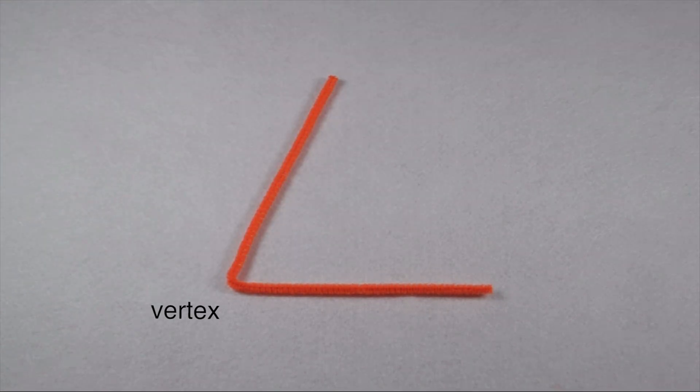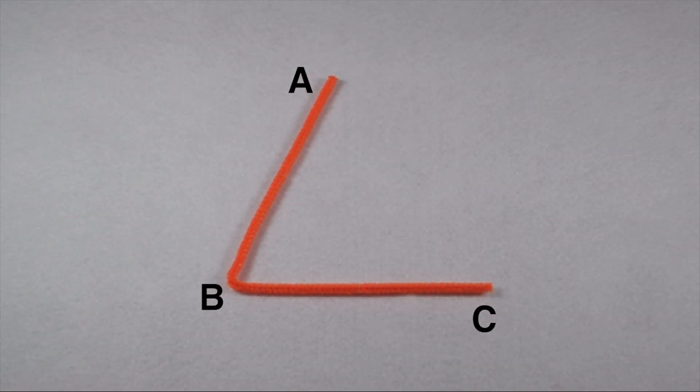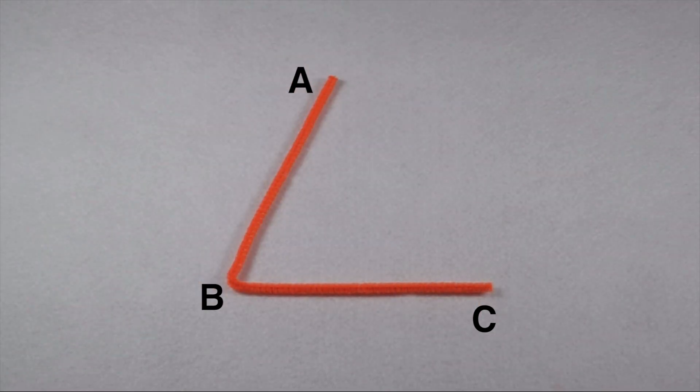From there, if you need to name the angle, you can name it by its letters: angle A, B, C, or we could go the other way and call it angle C, B, A. If the angle's by itself, we could even shortcut it and simply name it by its vertex of just angle B.